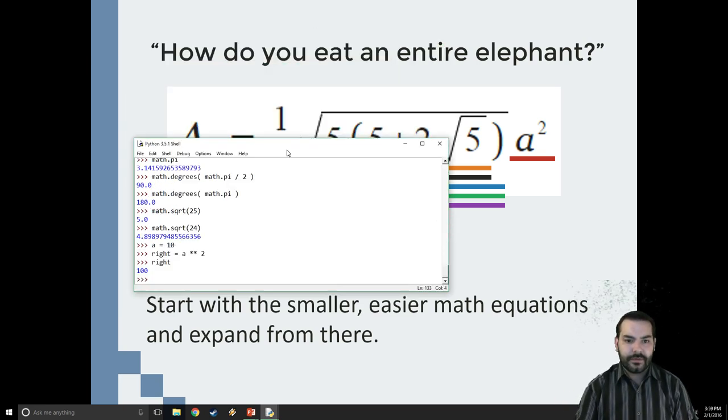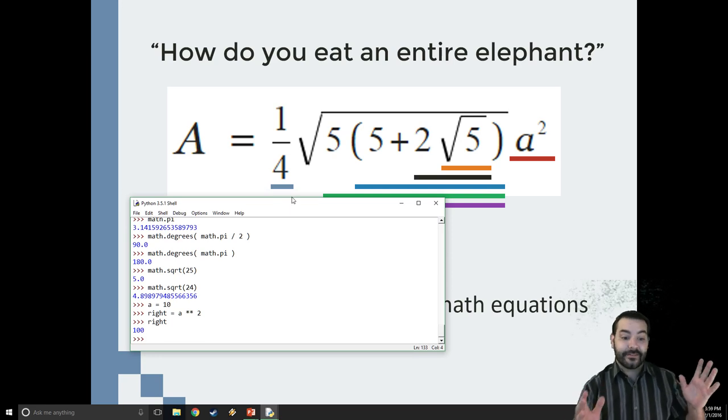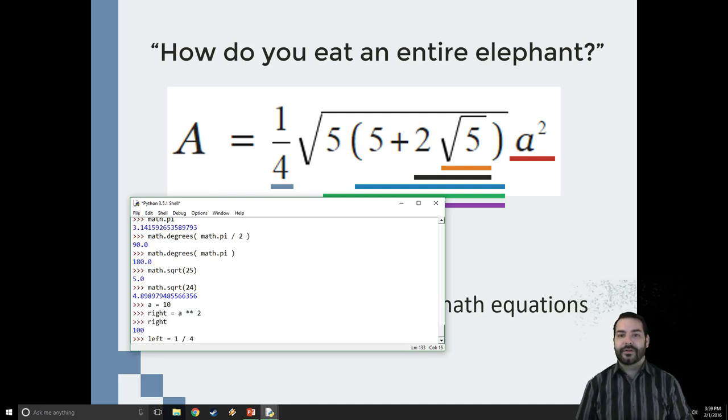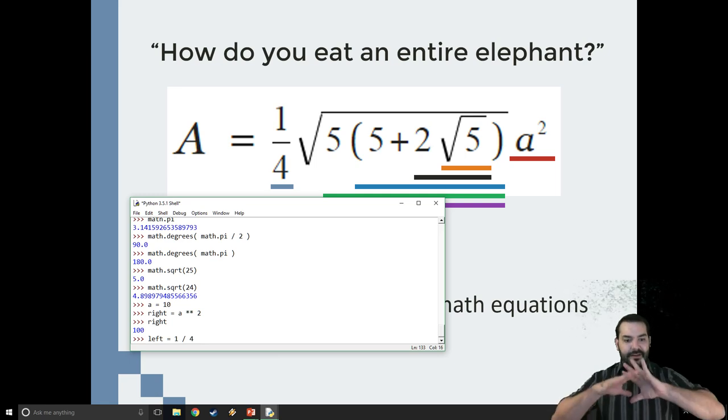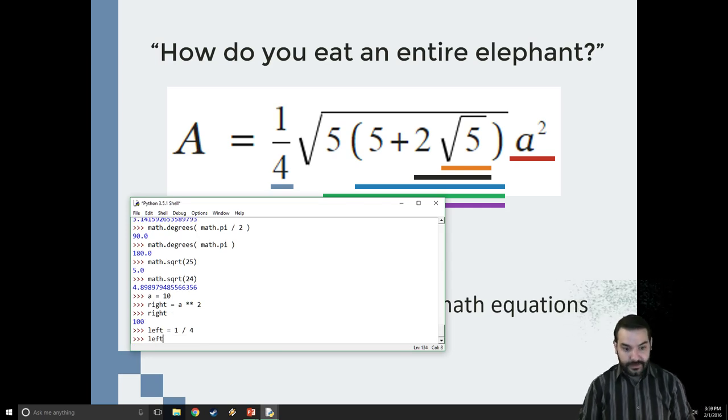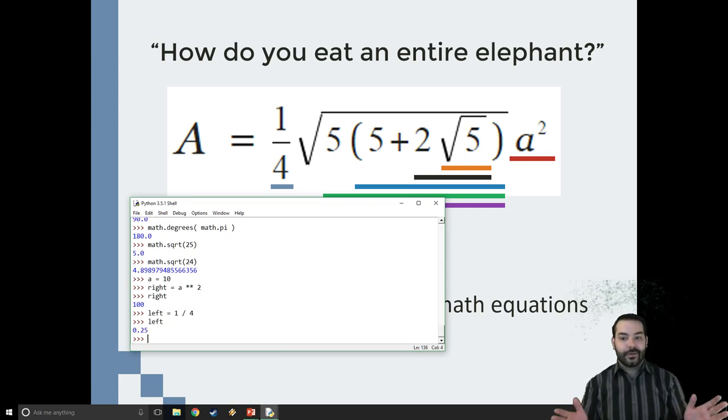But then what? Well, if we come over to the opposite end on the left, simple enough, one divided by four. Now, you're probably saying to yourself, why don't I just put 0.25? To which I say, what happens if it had been 1 over 3? At least here, the fraction handles itself. We know what it will be, but this is just a cleaner way of writing it. And so then we can compare that one as well. So I have left and right.